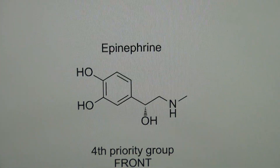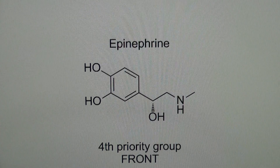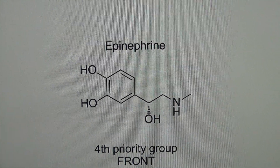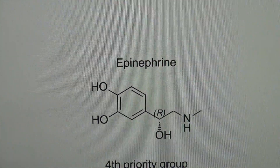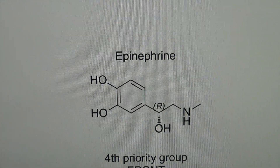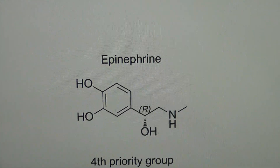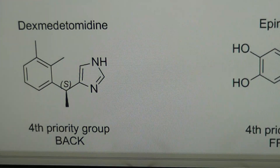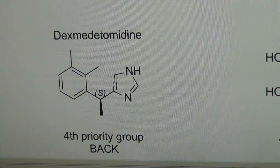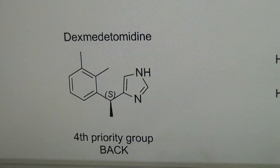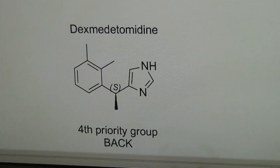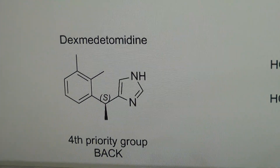You can scroll down and see the final answer: epinephrine is R, and dexmedetomidine — the compound with the complicated name — is S.